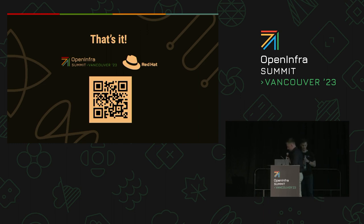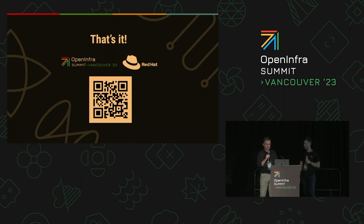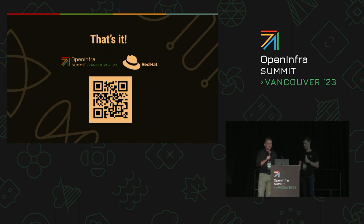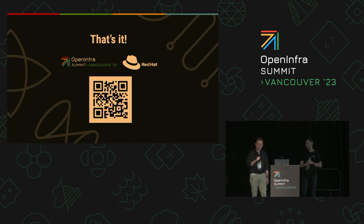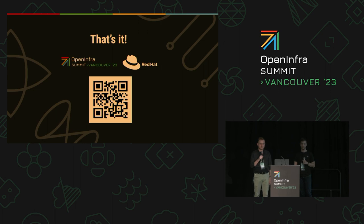The question was whether it matters if the low-hanging fruit tasks are just bug fixes or feature requests. I'm not sure if we had any feature requests in our pool, but I don't think it matters. If the task is simple to follow, not too complex, and doesn't require a huge deep dive into the project, I think it would work. It's just about the friction — if it's easy to follow and anyone who reads the task understands what it is about, that's a win.